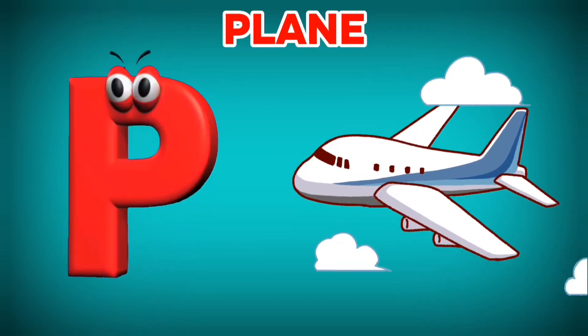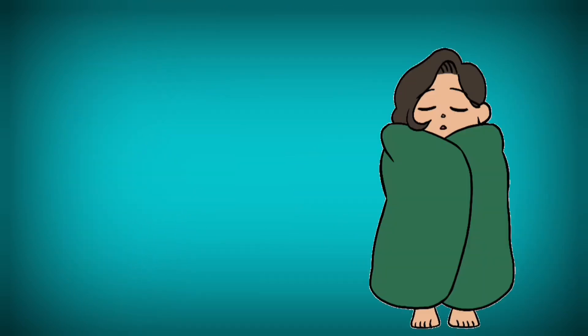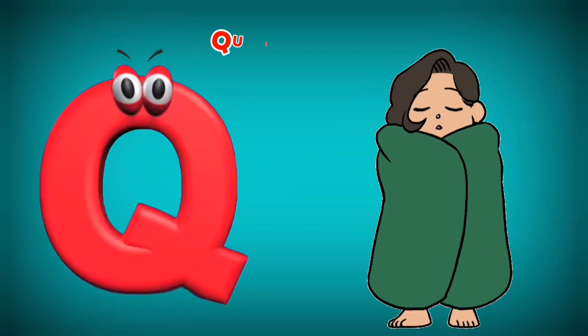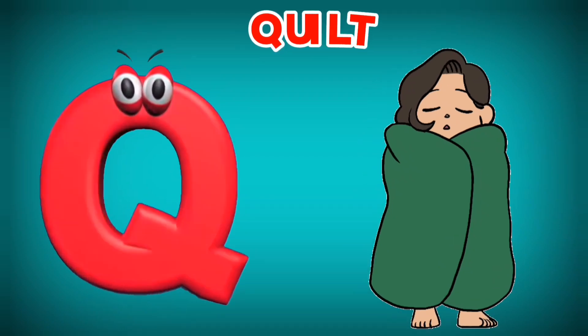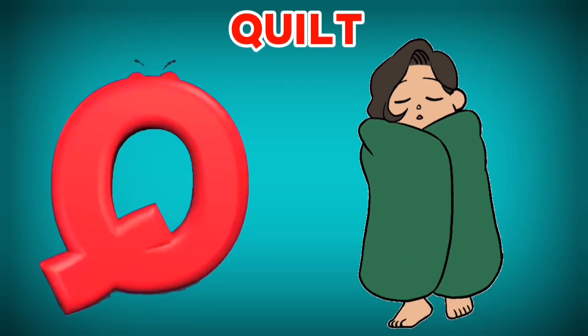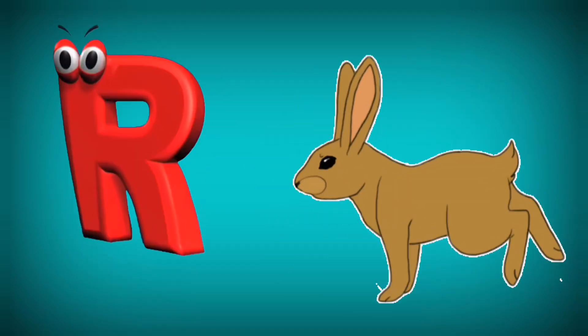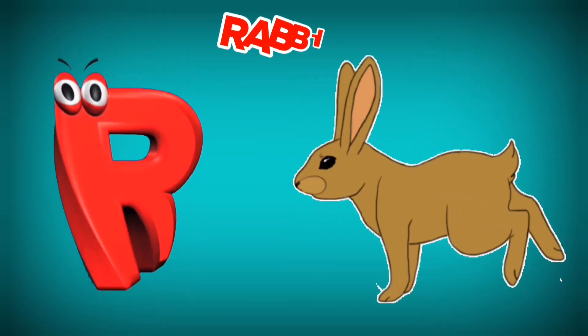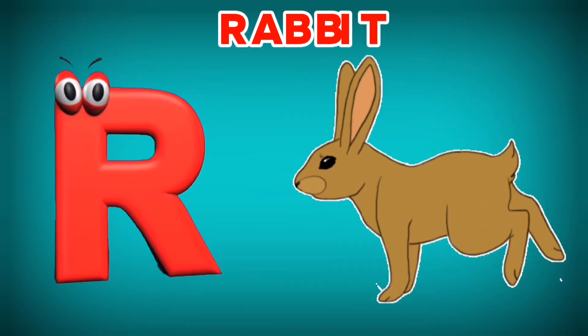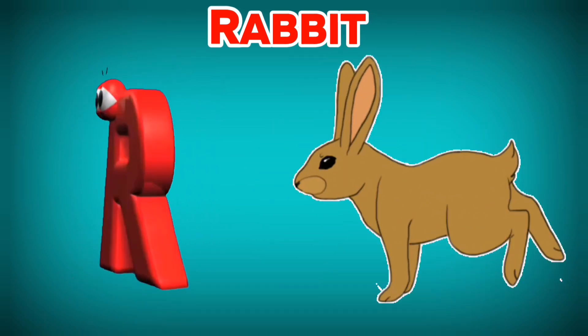P is for Plain. P, P. Plain. Q is for Quilt. Qu, Qu. Quilt. R is for Rabbit. R, R.